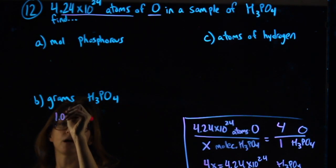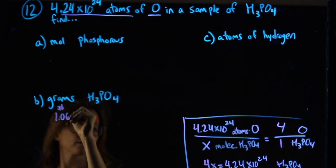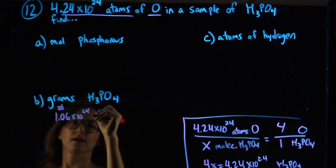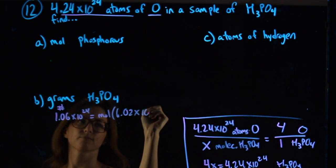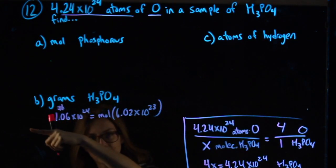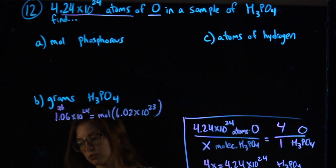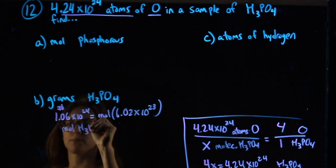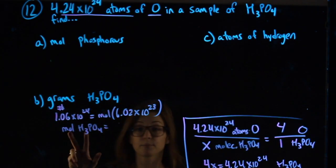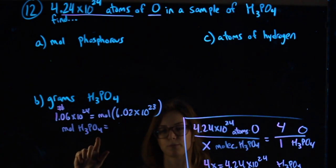So my number of molecules equals my moles times Avogadro's number. Dividing by the 6.02, so 6.02 goes on the bottom. What I have now found are my moles of H3PO4. I'm labeling not just that it's moles, but that it's H3PO4.